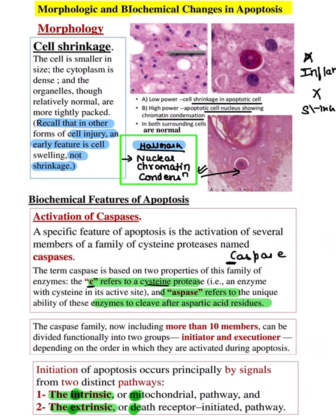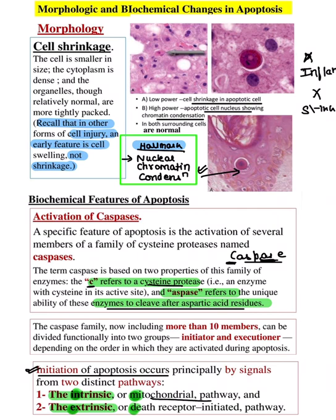Apoptosis uses caspases: C = cysteine protease; asp = ability to cleave after aspartic acid residue. There are initiator caspases and executioner caspases. Two pathways lead to initiation: the intrinsic (mitochondrial) pathway and the extrinsic (death receptor) pathway. Intrinsic = I-N, sounds like NI → caspase 9. Extrinsic = D-E → caspase 8, and X (roman numeral 10); also associated with FAS ligand — extrinsic = FAS ligand pathway, also known as CD95.